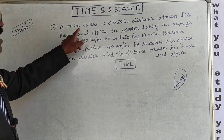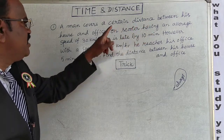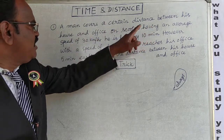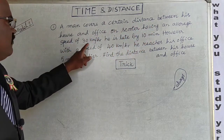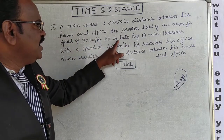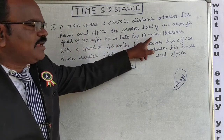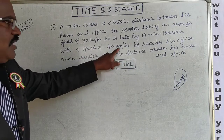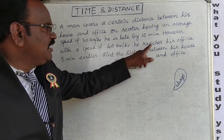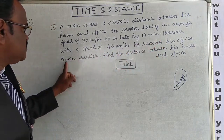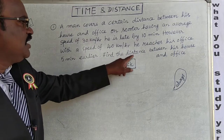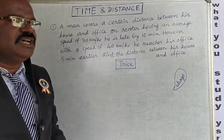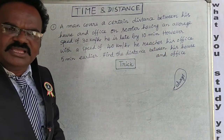A man covers a certain distance between his house and office on a scooter having an average speed of 30 km/h. He is late by 10 minutes. However, with a speed of 40 km/h he reaches his office 5 minutes earlier. Find the distance between his house and office.